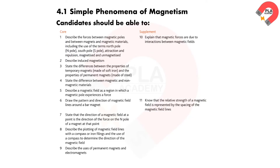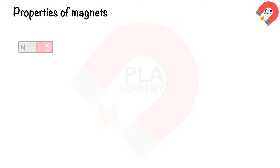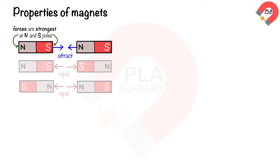Candidates are expected to have a thorough understanding of the syllabus details outlined in the accompanying figure: properties of magnets. Magnets have two poles, a north and a south, at the ends of the magnet. Magnetic forces are strongest at the north and south poles. When two magnets are held close together, there will be a force between the magnets.